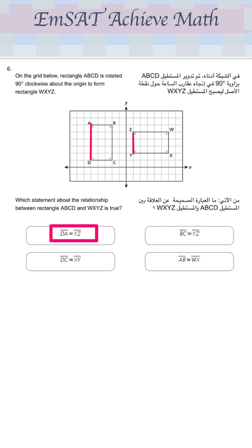Let's see DA congruent to YZ, which is wrong. BC congruent to YZ, which is also wrong. DC congruent to XY, which is also wrong. And then we can choose that as the correct answer because this is the only choice. But look at AB congruent to WX. So AB congruent to WX, which is correct.